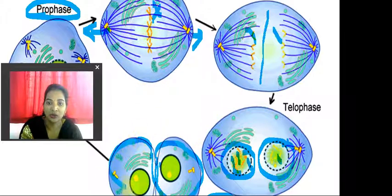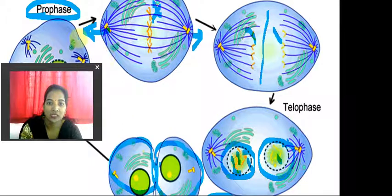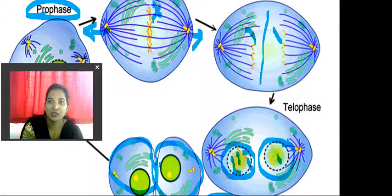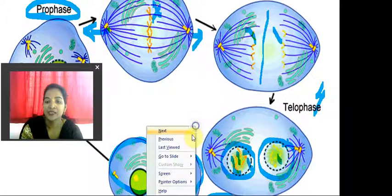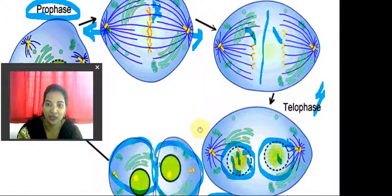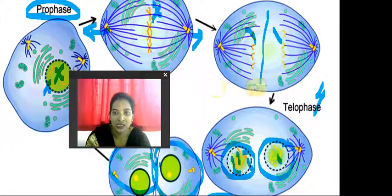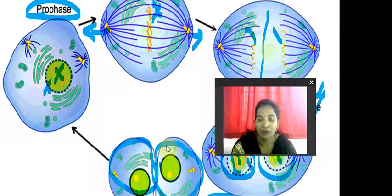So how many stages are there? First is prophase, second is metaphase, third is anaphase, fourth is telophase, and the final one is cytokinesis. This is how the size and shape of the chromosomes vary.